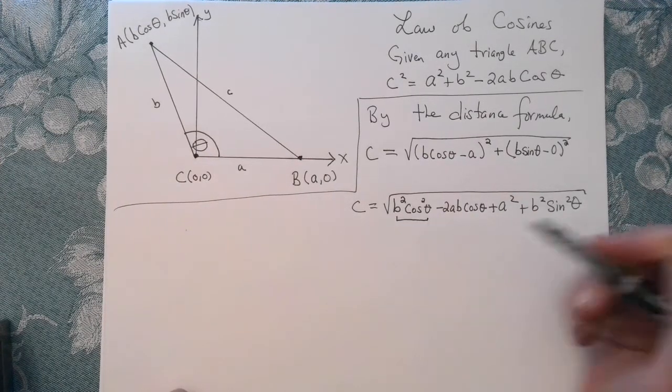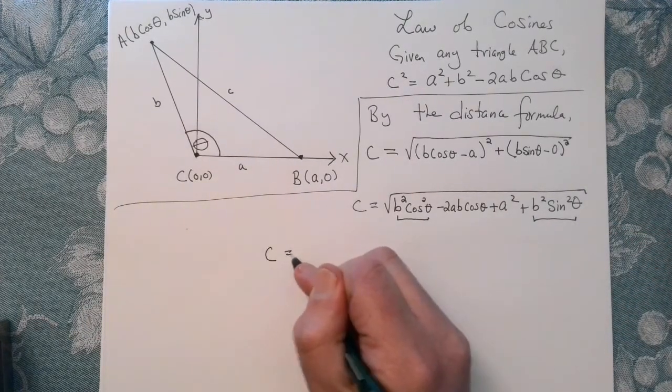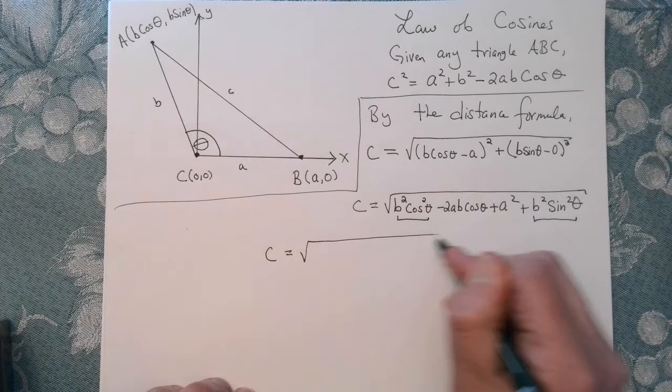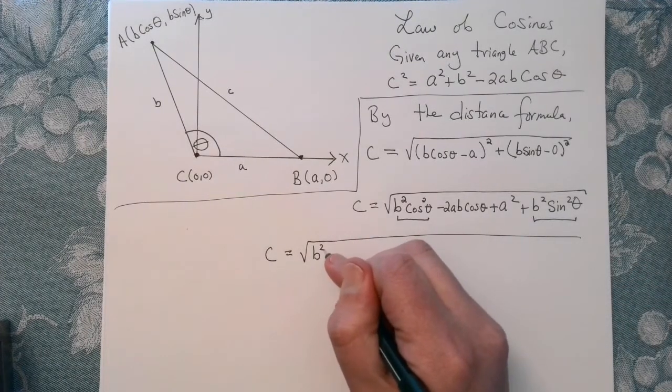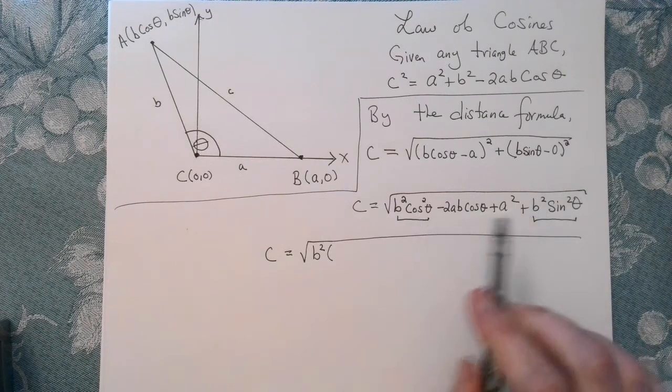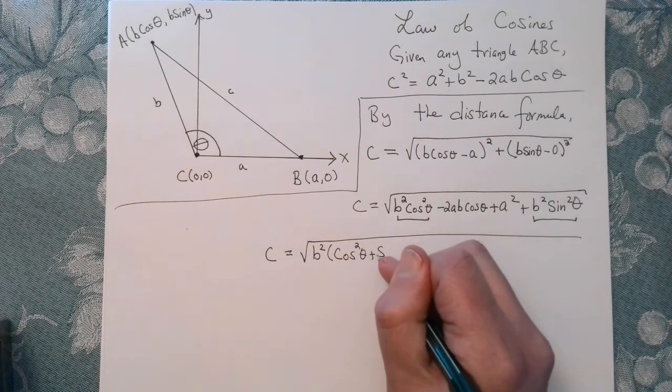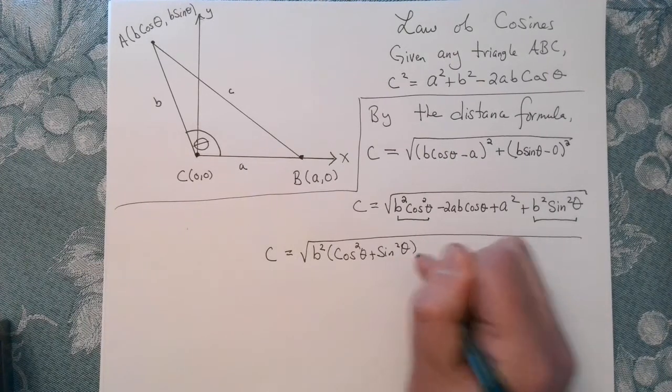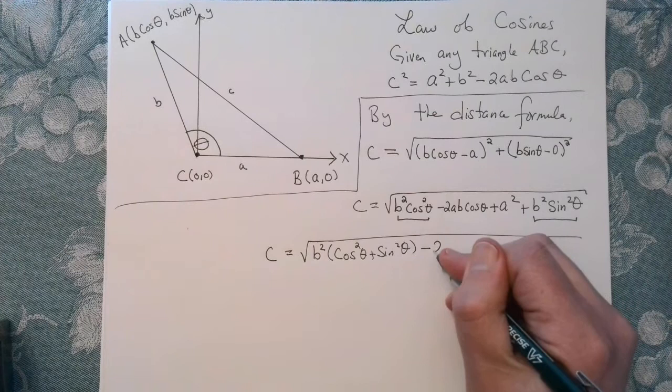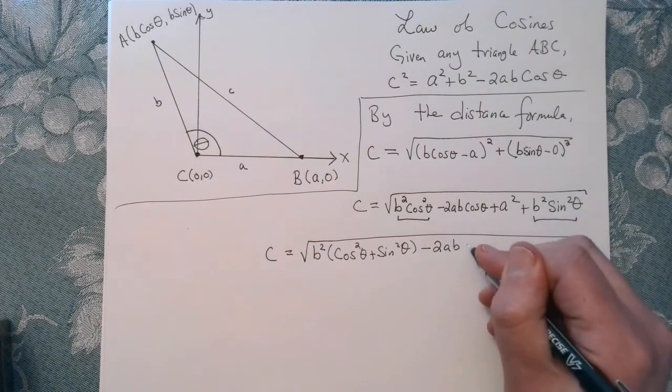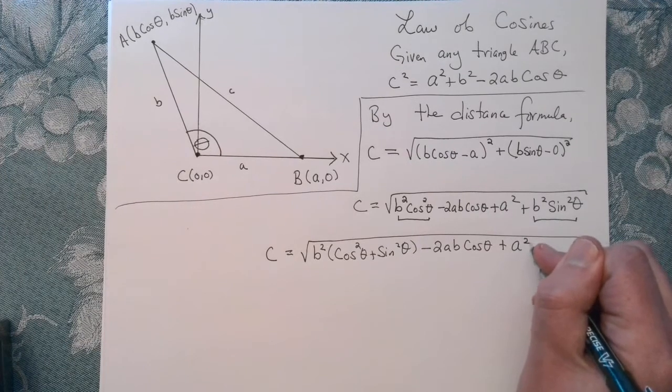Well, I'm going to bring these terms together, and I want to notice that I get a Pythagorean identity. So C is equal to, we have B squared, which I can factor out of these two terms, cosine squared of theta plus sine squared of theta. And then I'm left with minus 2AB cosine of theta plus A squared.